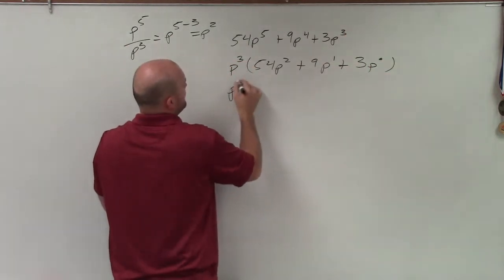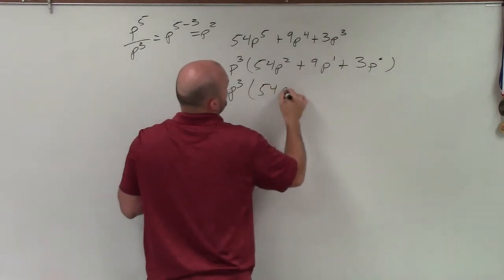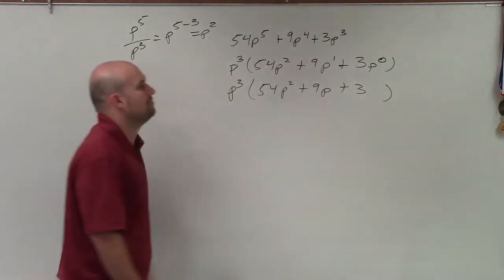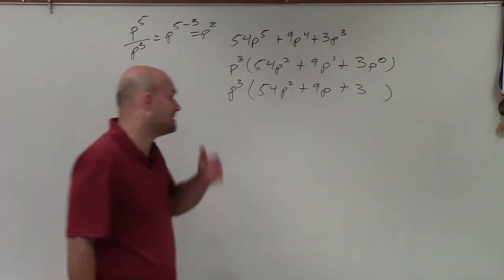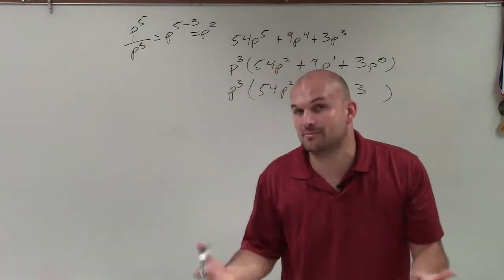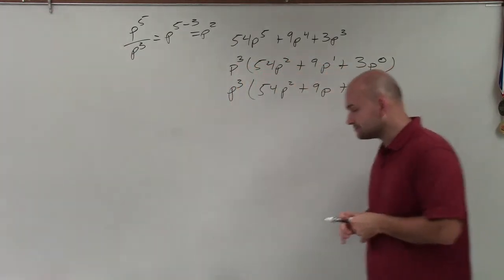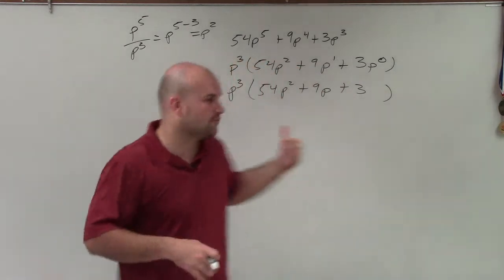OK, so then I rewrite that as 54p squared plus 9p plus 3. We don't really write p to the 0 power or p to the first. We just leave them as that. All right, so now let's go and look at the numbers, right? And a lot of times we do this at the same time, but I'm kind of breaking it down because this adds a kind of a teaching aspect for us.